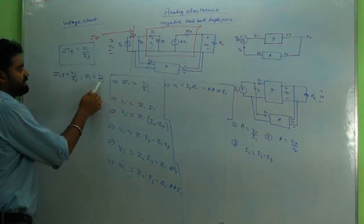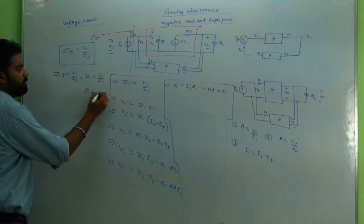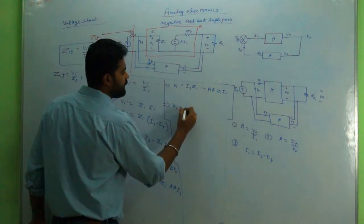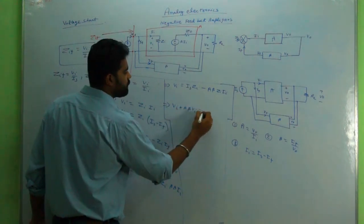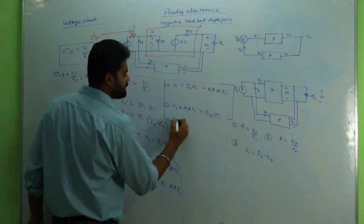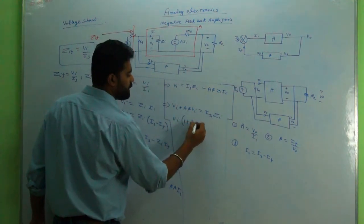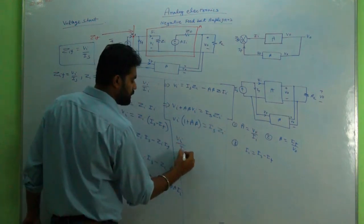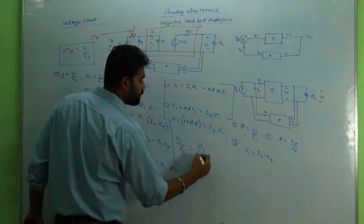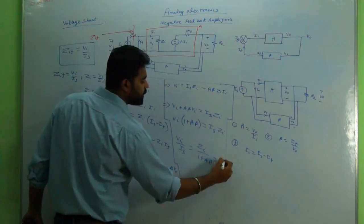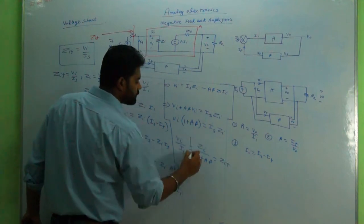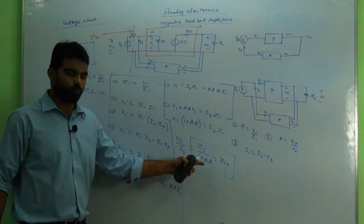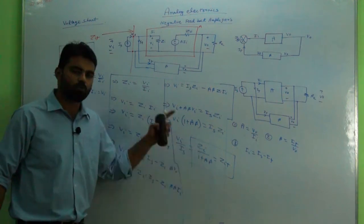Now we can see here that ZI into II is obviously VI, so I can replace it. So VI plus A into beta VI equal to IS into ZI. And thus VI if taken common is 1 plus A beta IS upon ZI. And thus VI upon IS equal to ZI upon 1 plus A beta. That is nothing but ZIF. So it is established from the mathematical expression that ZIF, input impedance with feedback, is ZI upon 1 plus A beta. That is, the input impedance is actually decreasing when voltage shunt combination is used.